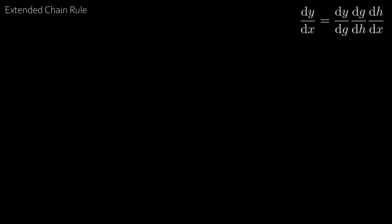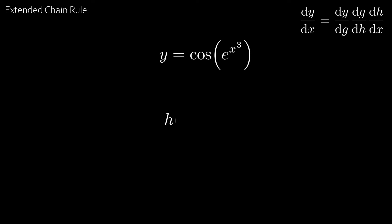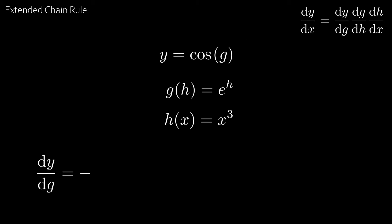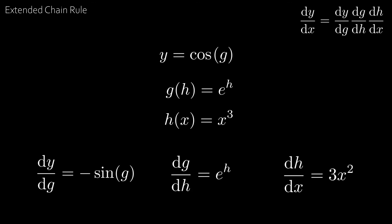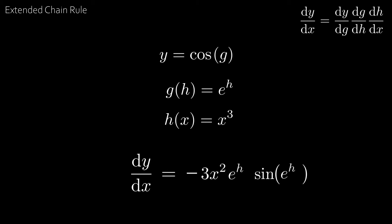Take y equal to cosine of e to the x cubed. If we substitute h of x equal to x cubed and g of h equal to e to the h, then y of g is equal to cosine g. Then dy by dg is equal to minus sine g, dg by dh is equal to e to the h, and dh by dx is equal to 3x squared. Multiplying them all together, dy by dx equals minus 3x squared e to the h sine g. Since g equals e to the h and h equals x cubed, we substitute back to get our derivative.